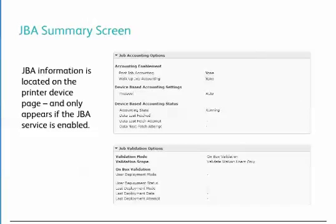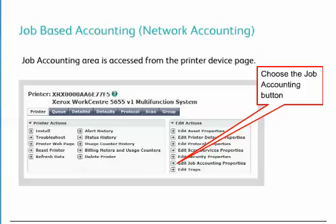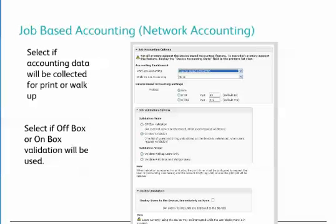JBA information is located on the Printer Device page. This screen will only appear if the JBA service has been enabled and it serves as a summary of the settings just reviewed. After JBA has been configured, you should access JBA for one of the devices by going to its device page and clicking on Edit Job Accounting Properties. The administrator has the ability to specify validation either directly on the MFD or from a server, and can specify whether accounting is to be used for walk-up services or print services. After configuring the single device, consider saving the settings as a configuration set to apply to several devices.